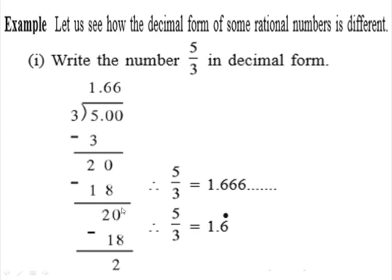Bring down 0 again — the number obtained is 20. We take 3 sixes are 18; subtract 18 from 20 and again get remainder 2. You are continuously getting 2 as the remainder. If you keep dividing 20 by 3 at every step you get remainder 2, so the division will not come to an end. The digit 6 keeps recurring in the quotient. Therefore the decimal form of 5/3 is 1.666... We put a dot over 6 and write it as 1.6̄ (1 point recurring 6).